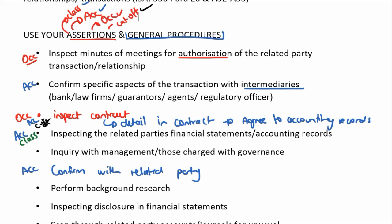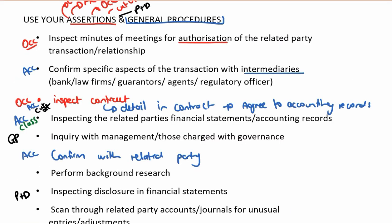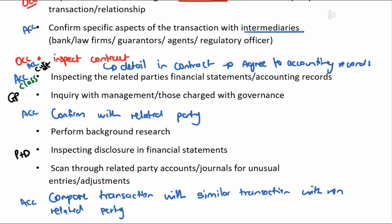For general procedures: standard inquiry with management about related party transactions; inspecting the presentation and disclosure in the financial statements for presentation and disclosure; scanning through the related party accounts or journal for unusual entries; and agreeing the total transactions with this related party to what's in the related party's general ledger account.